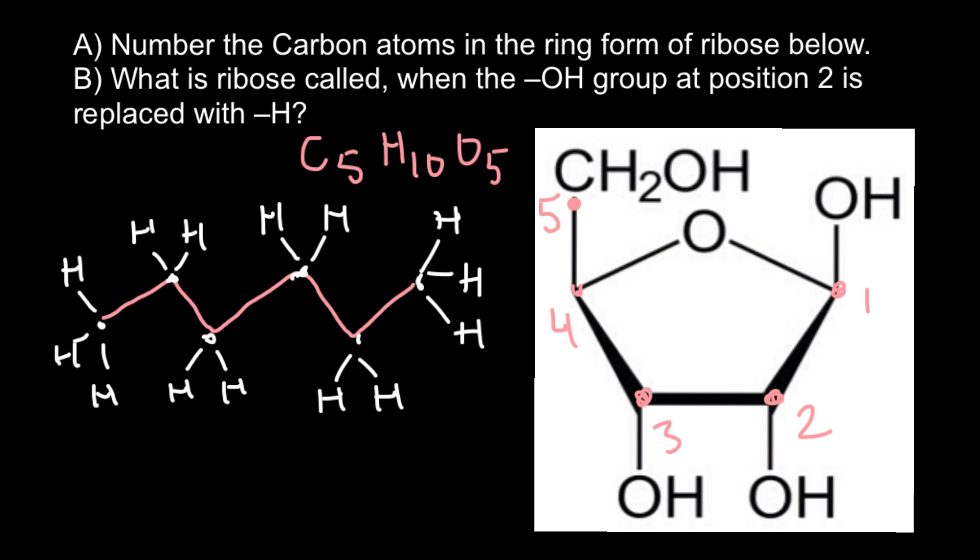So this is second position, and if instead of OH group here we would have only hydrogen, we would call this deoxyribose. So deoxy - D stands for the missing, and oxy means oxygen. So we miss one oxygen in this ribose. And sometimes we can miss on the third carbon also.